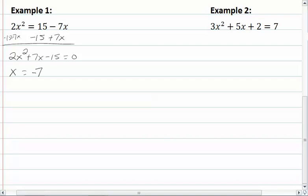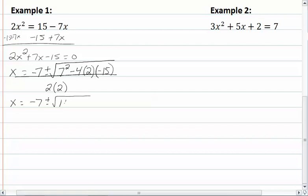Opposite of our b plus or minus the square root of 7 squared minus 4 times our a times our c all over 2 times our a. So now we get that x equals negative 7 plus or minus the square root of 169 all over 4. So that means x equals negative 7 plus or minus 13 all over 4.